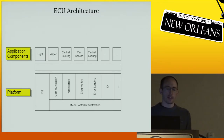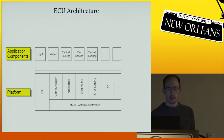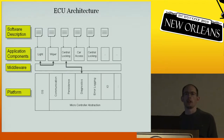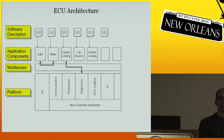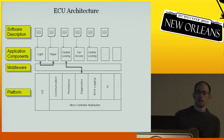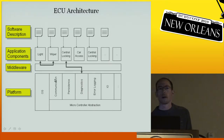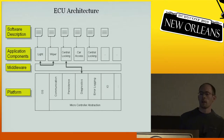Besides the challenge that this is a really big ECU, we had another one: we were one of the first to adopt a new automotive software standard called AUTOSAR. What this standard does is specify a description language for software components — an XML format for describing software components. Every software component is described by a little XML document. It further specifies that there should be a middleware layer which is also generated, and it defines the API of the basic software platform. The idea is to make software reusable across different platforms and vendors.